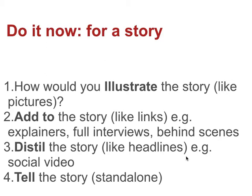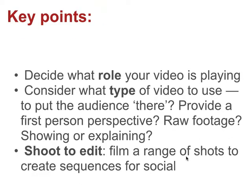Think about that for a story you've worked on or would like to work on, and use it to inform your editorial decision-making. Ultimately you're going to be choosing what's practical and what justifies the effort. Some key points to round up: first, decide what role your video is playing — is it there to illustrate what you've written, or to tell the story entirely? Think about the type of video you're using: is it to put the audience in a particular place, provide a first-person perspective, use raw footage, or show and explain something? Unless you're doing illustrative, additive, or live video, go out and shoot to edit — shoot a range of shots so you have material to cut together to create a sequence.